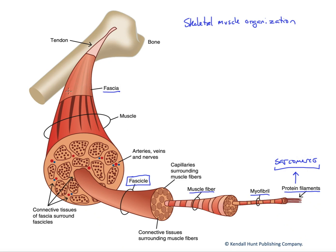Coming back to connective tissues — the fascial tissues around the whole muscle, around the fascicle, and even around the individual muscle fibers — these are continuous along the lengths of those structures and come together at the end of the muscle to join and form the tendons. We should think of tendons not as attached to the end of the muscle, but as continuous with connective tissues running through all of the concentric layers within the muscle. Tension generated internally by the protein filaments must be conveyed through these extracellular connective tissues and onward to the tendon to generate force on the bones.